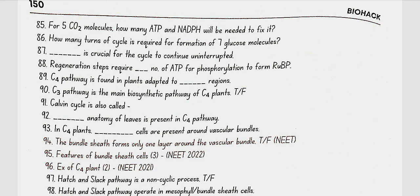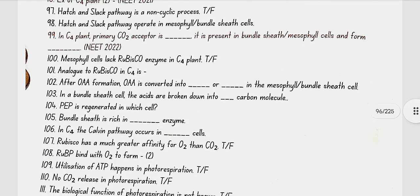Features of bundle sheath cells: they have a large number of chloroplasts, thick walls impervious to gaseous exchange, and no intercellular spaces. Examples of C4 plants are maize and sorghum. The Hatch and Slack pathway is a cyclic process — it is false to say it is non-cyclic. The Hatch and Slack pathway operates in mesophyll cells.